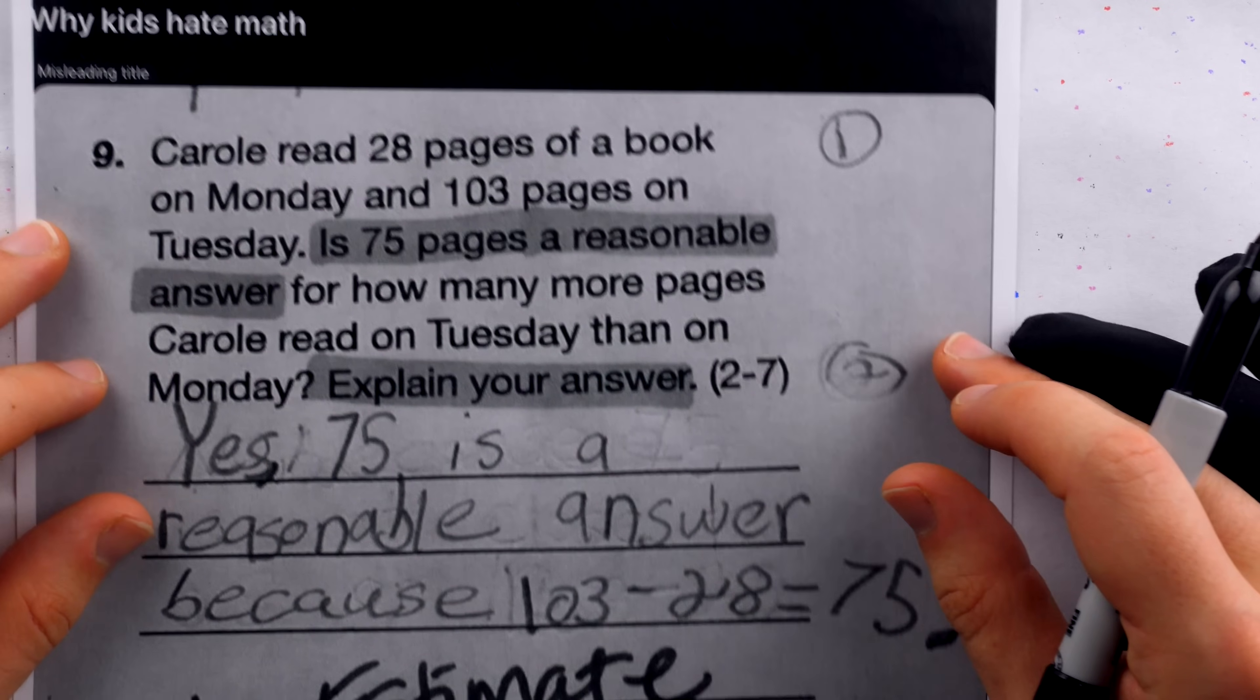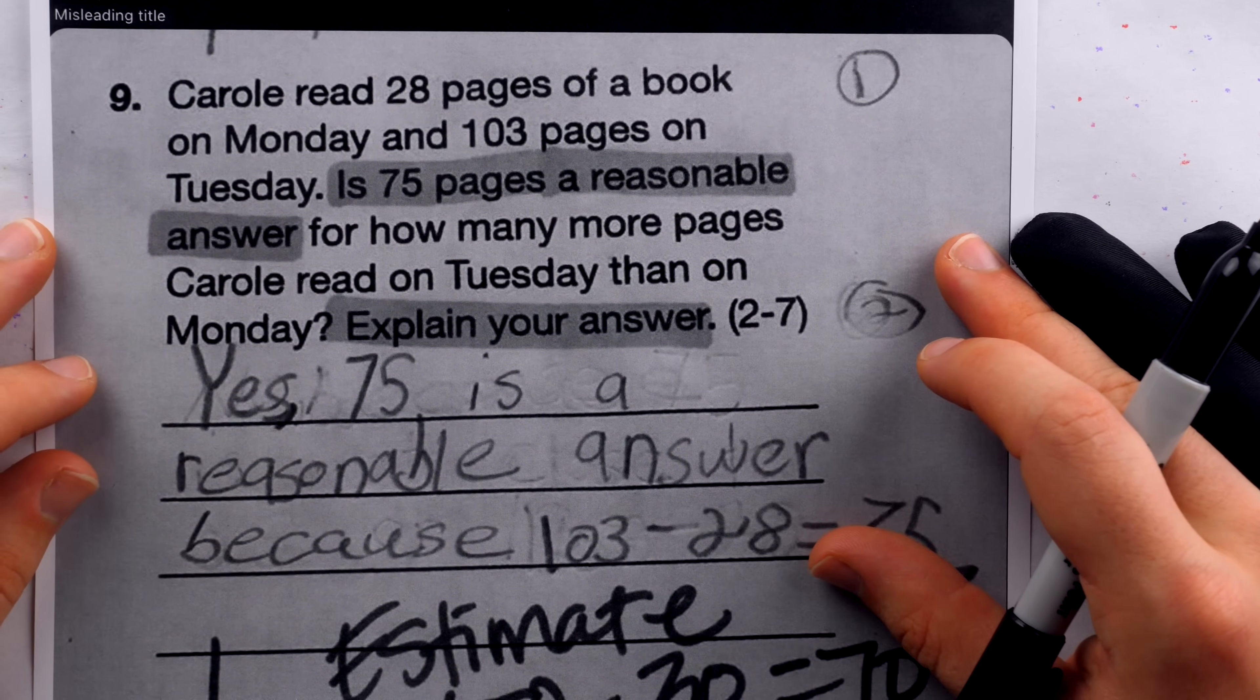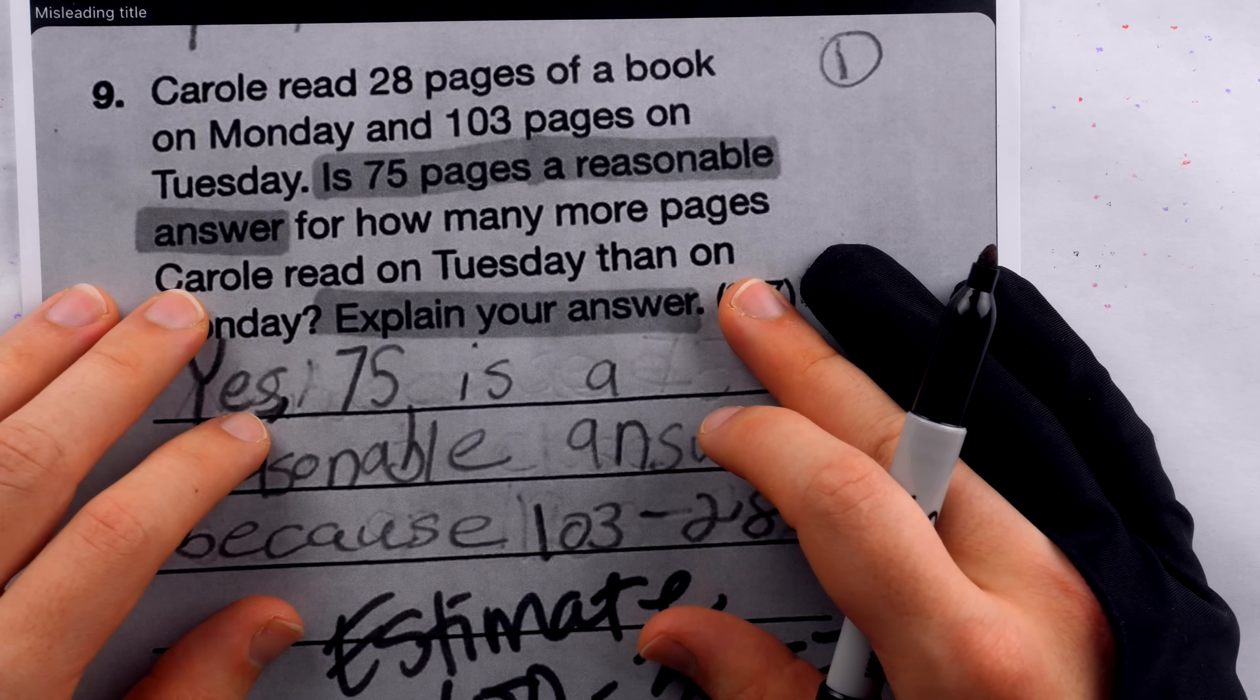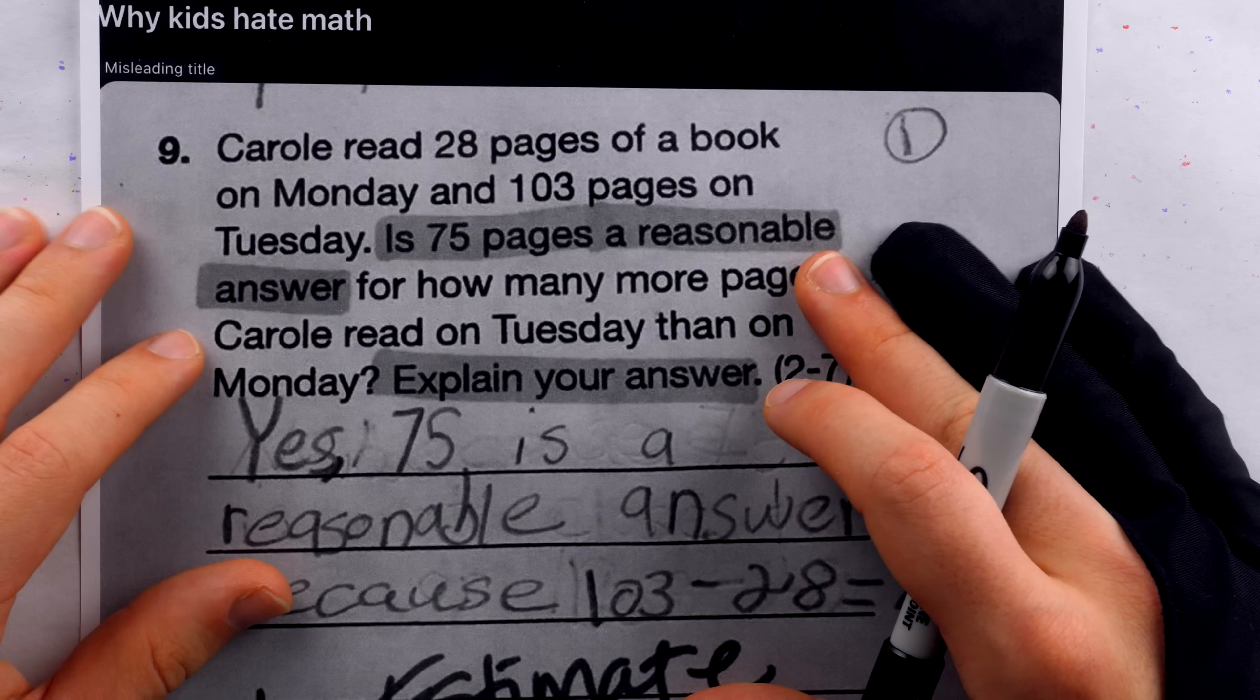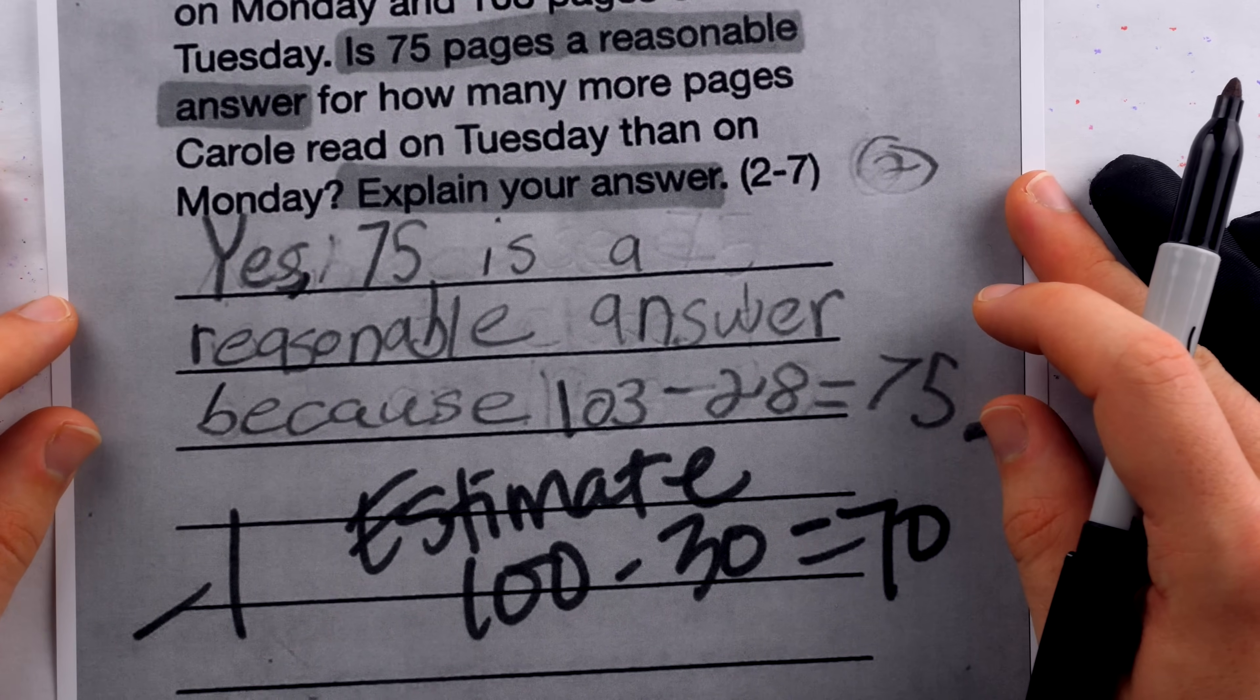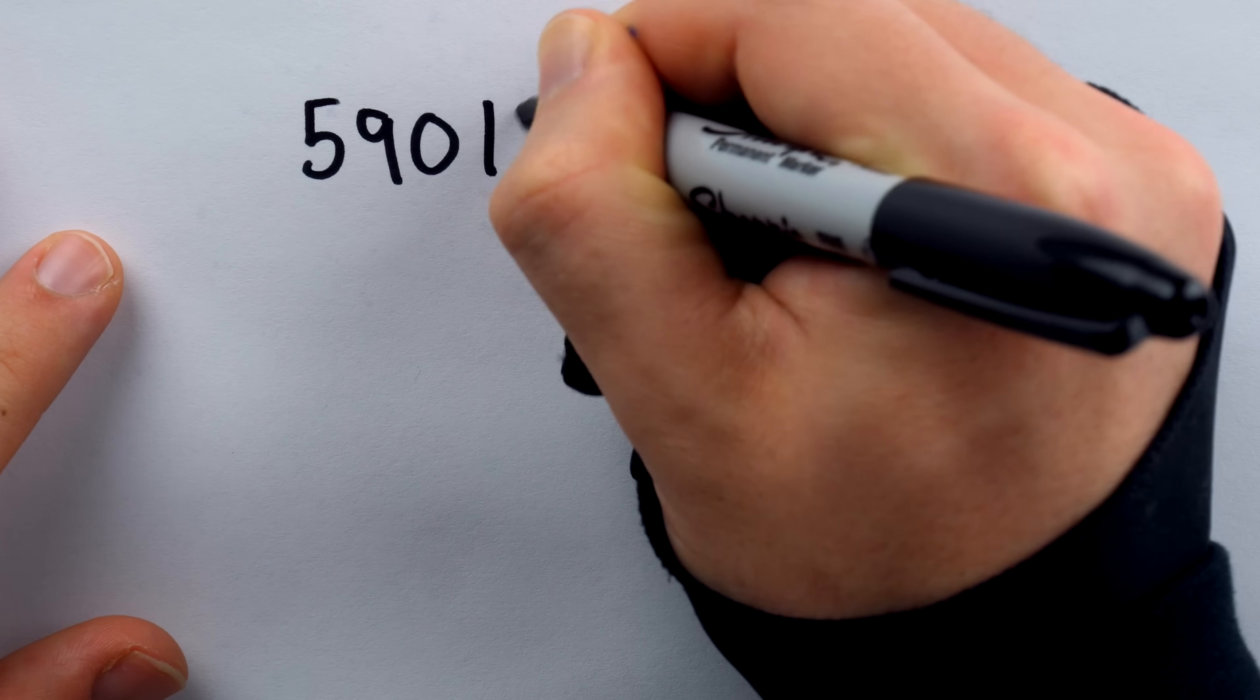Another way we could give the teacher the benefit of the doubt is by assuming that this is just one sub problem from a bigger section that says, you know, all of the following problems should be solved with estimation. You should be using estimates. There could be some context here about what you're supposed to do and how you're supposed to answer the question that we are missing. In that case, I would say it's great that they're learning estimation. That's a really important skill to have, but the arithmetic here is just too simple to require it. And so you can't possibly take points away from a student for saying, I mean, this is so trivial. I'm just going to do the math. I'm not going to estimate.